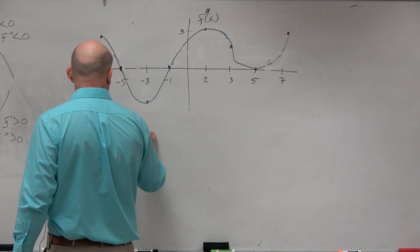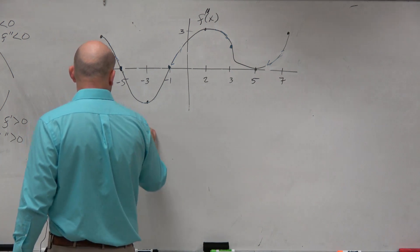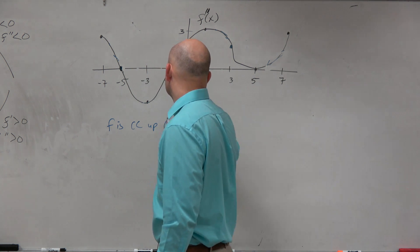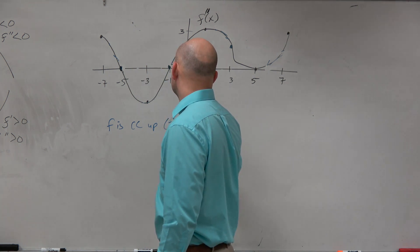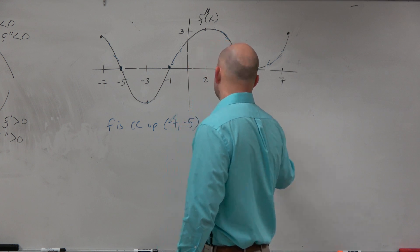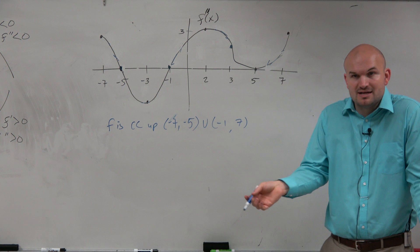So we can say that the graph of f is concave up on the interval negative 7 to negative 5, union negative 1 to 7, because the second derivative values are positive.